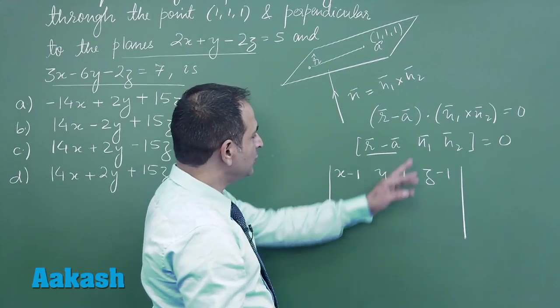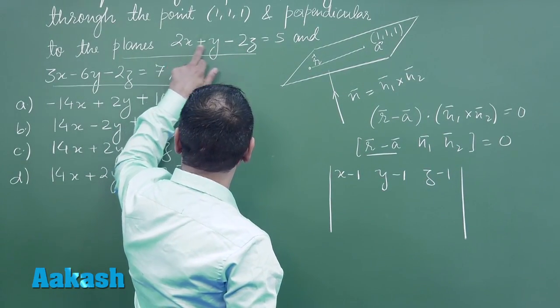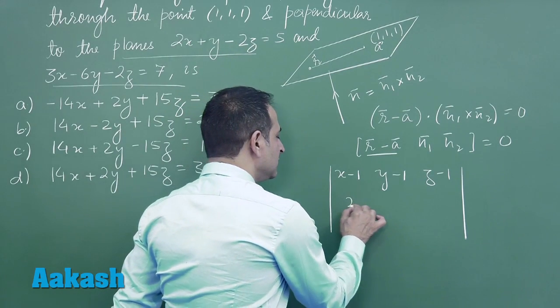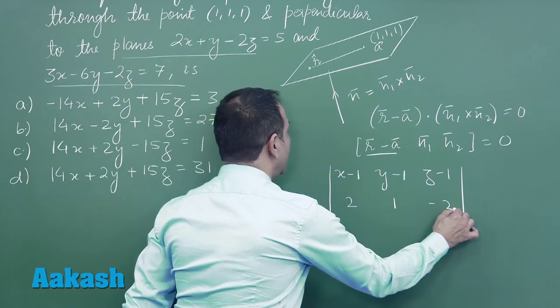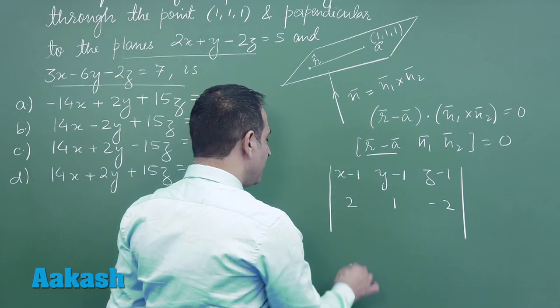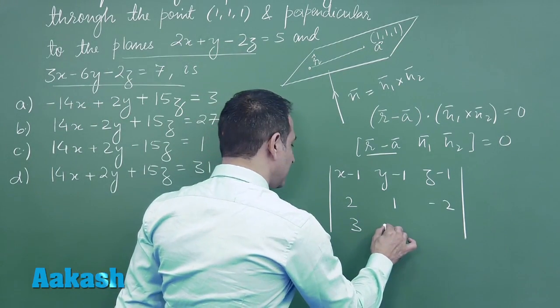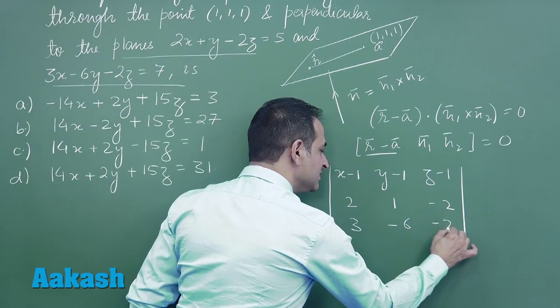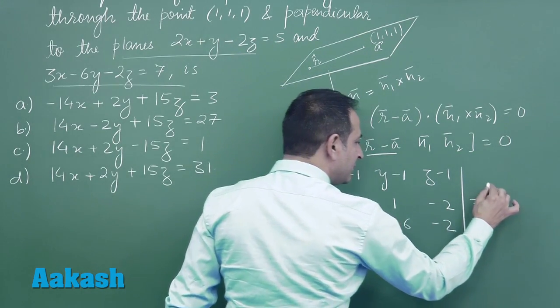What about n1? n1 is 2, 1, and minus 2. And what about n2? n2 is 3, minus 6, and minus 2. So the scalar triple product is 0.